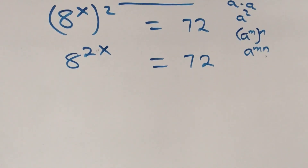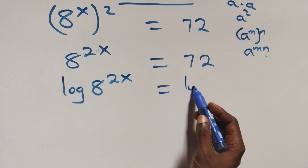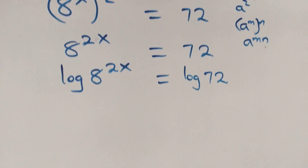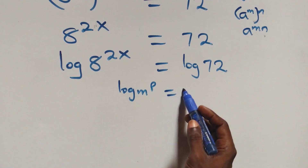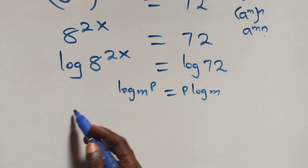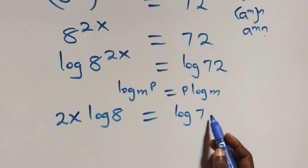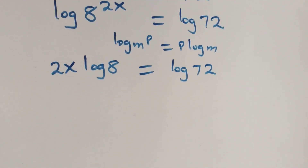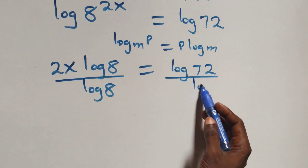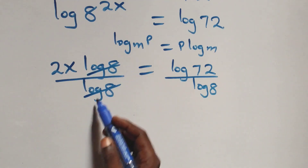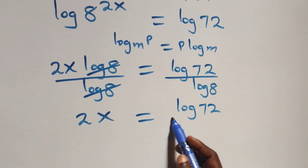The next step: we take the log on both sides. That is, we have log of 8 raised to power 2x equals log 72. We then apply the power rule of logarithms: log of m raised to power p equals p times log m. So this becomes 2x log 8 equals log 72. We then divide both sides by log 8, which cancels, leaving 2x equals log 72 over log 8.